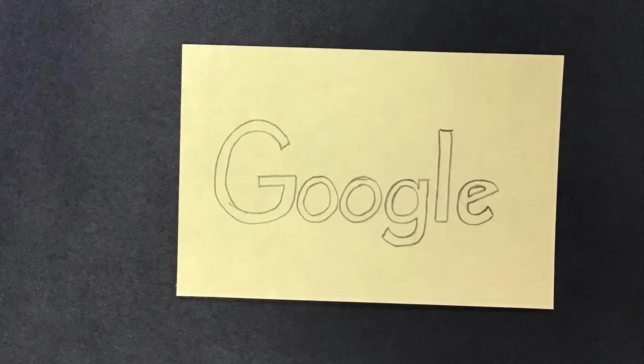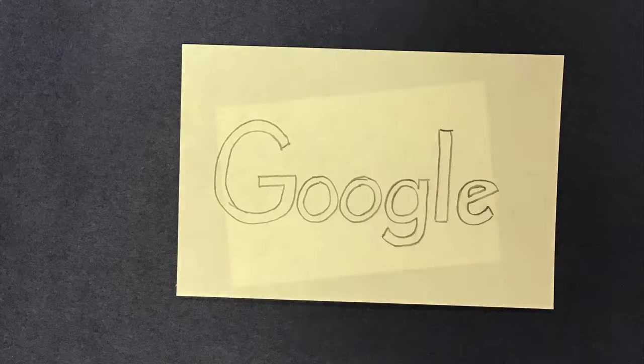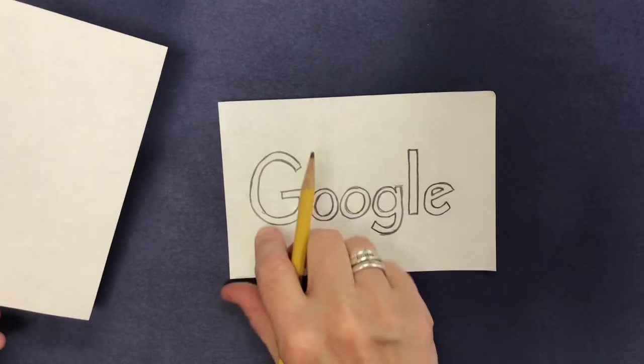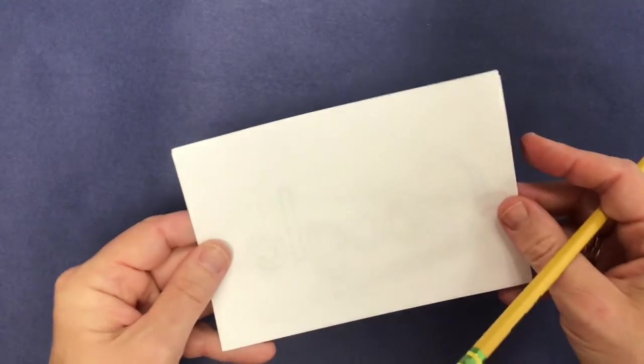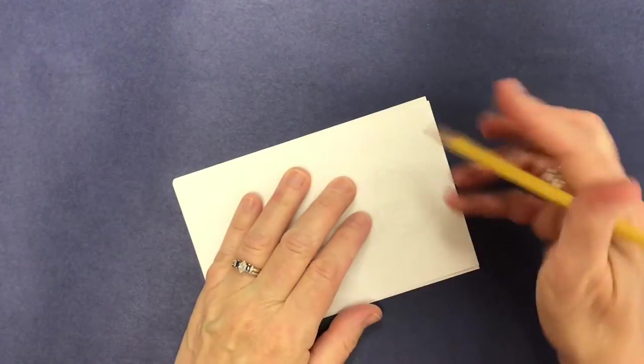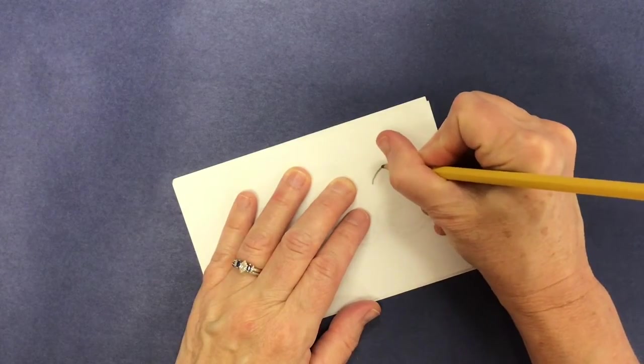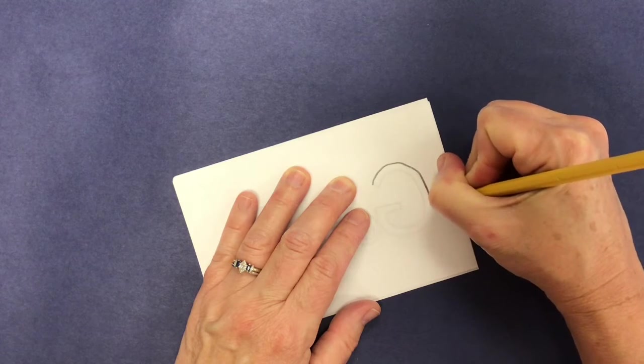First you're going to start by making your cool design. You're just going to draw it on regular paper. Then you're going to take that regular paper and put it backwards or upside down onto another piece of white paper. You're going to make sure that you can see through it and trace this mirror image of your design.